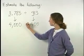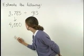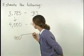So we have 4,000 divided by 400 or 400 divided into 4,000.